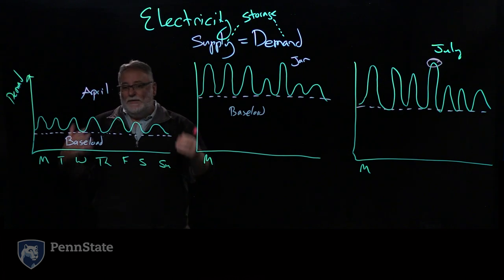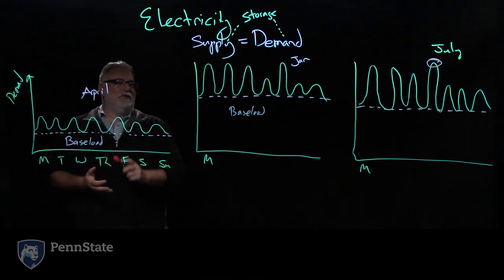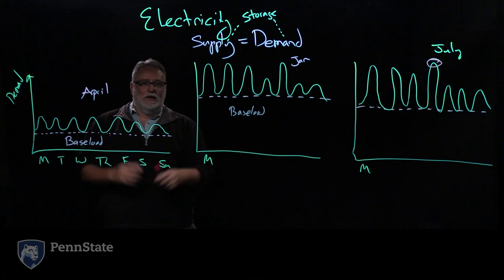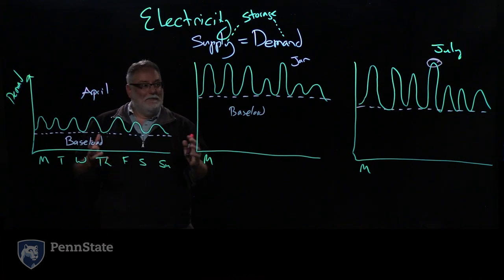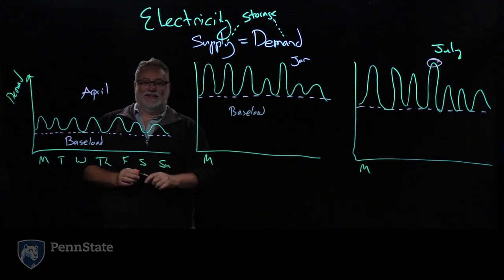We have choices in how we get there. We can generate electricity with fossil fuels, nuclear, and renewables. But we need the policies to be in place so that we can achieve the right balance and have a stable, reliable, resilient grid where electricity prices are cheap. That's the next segment.